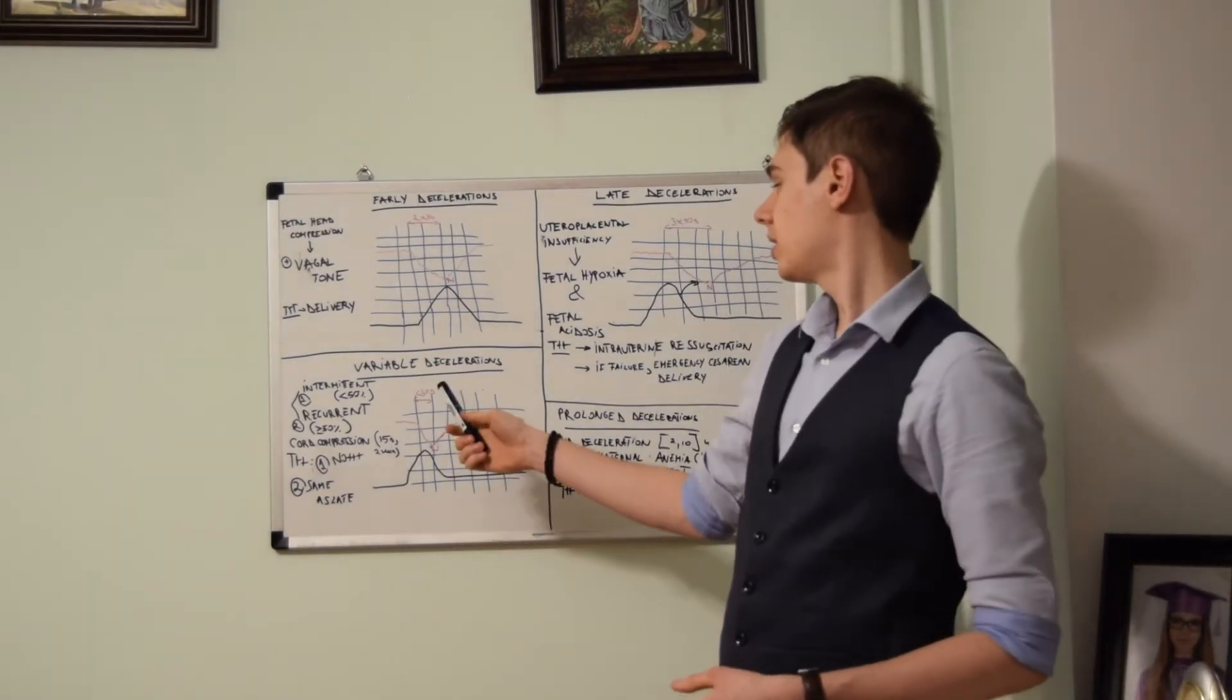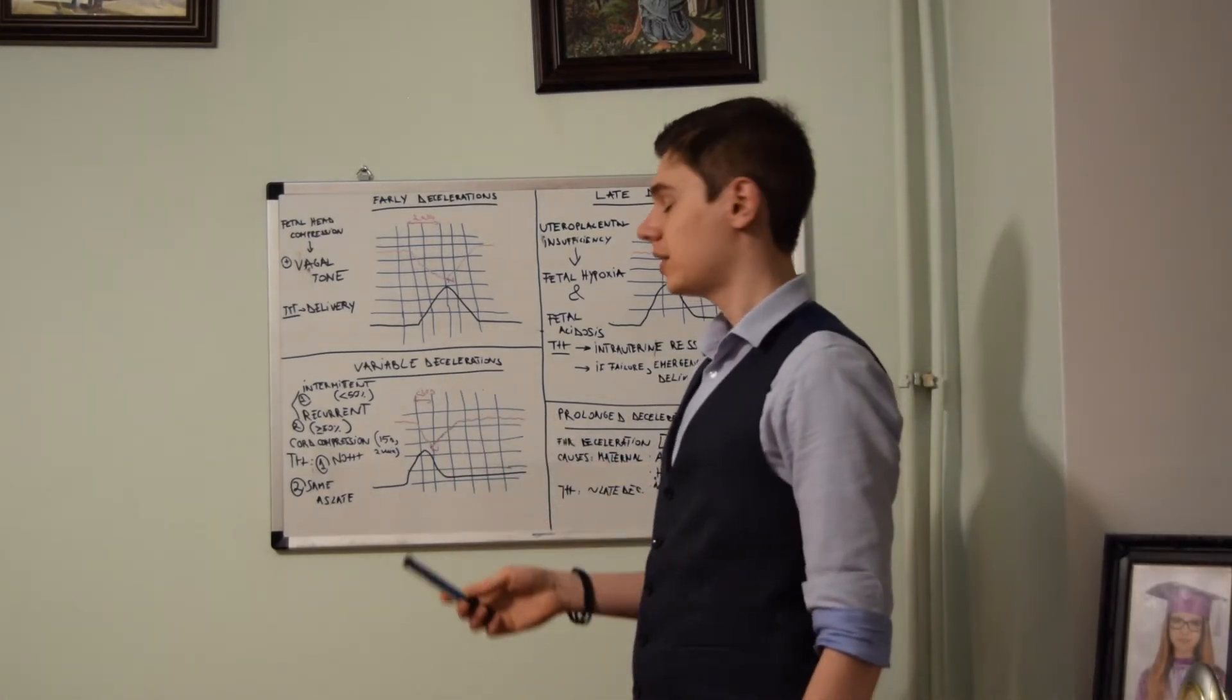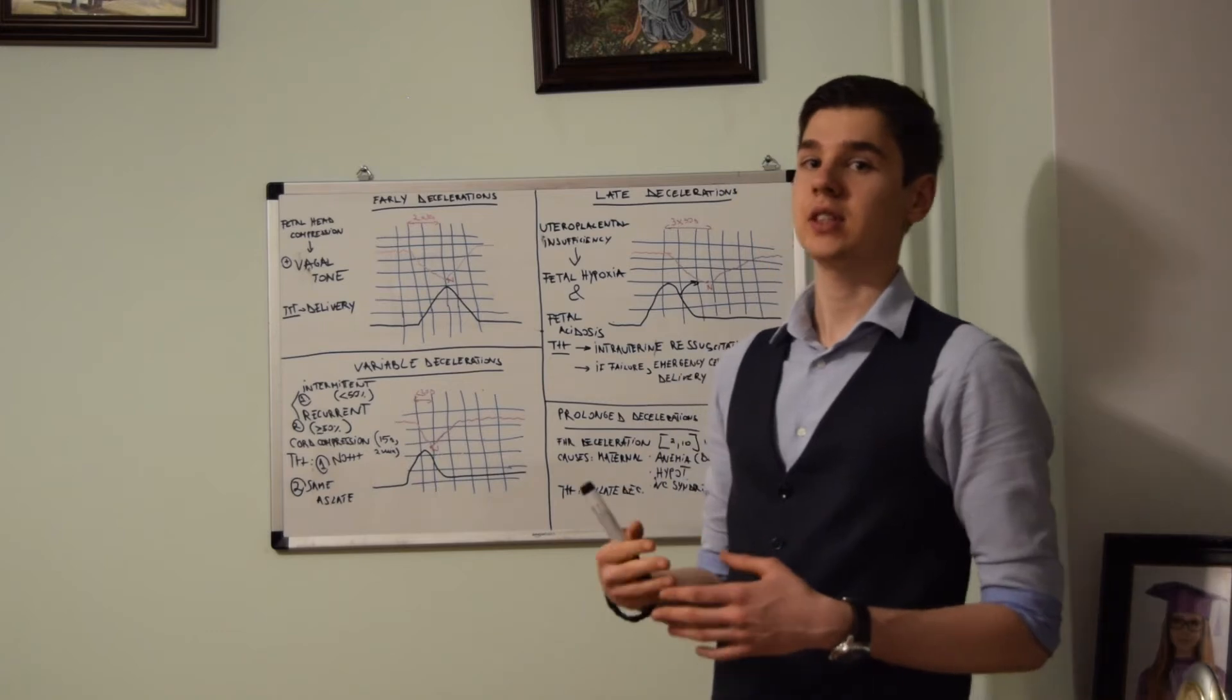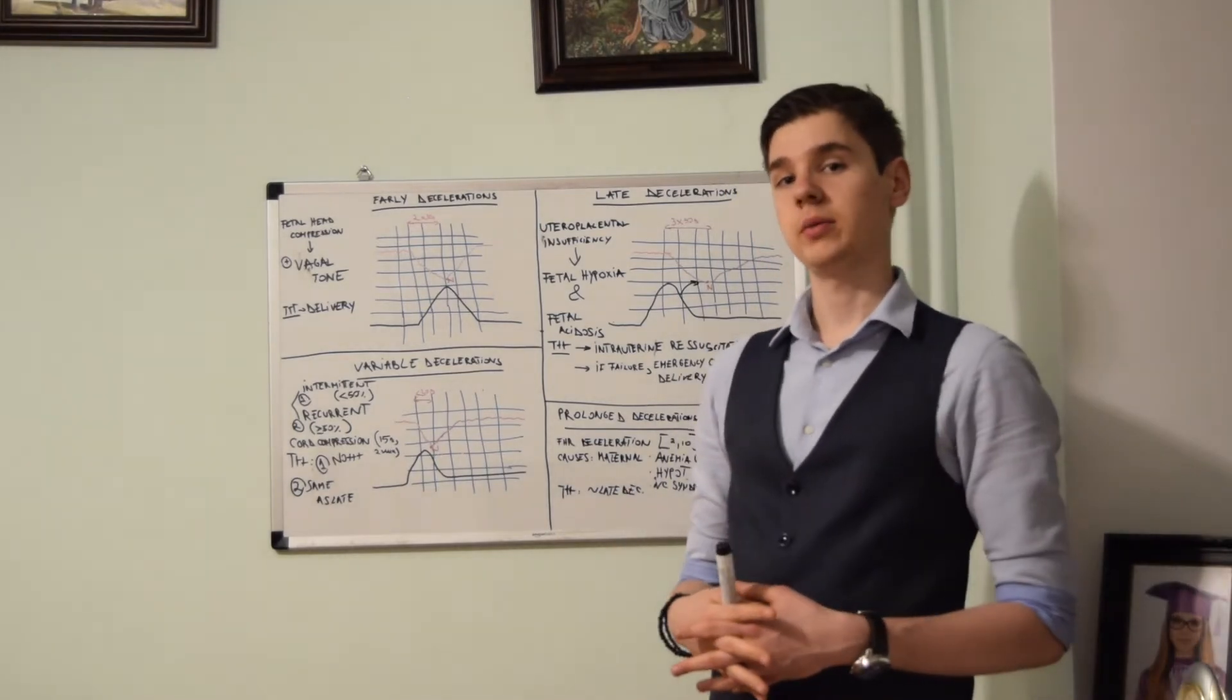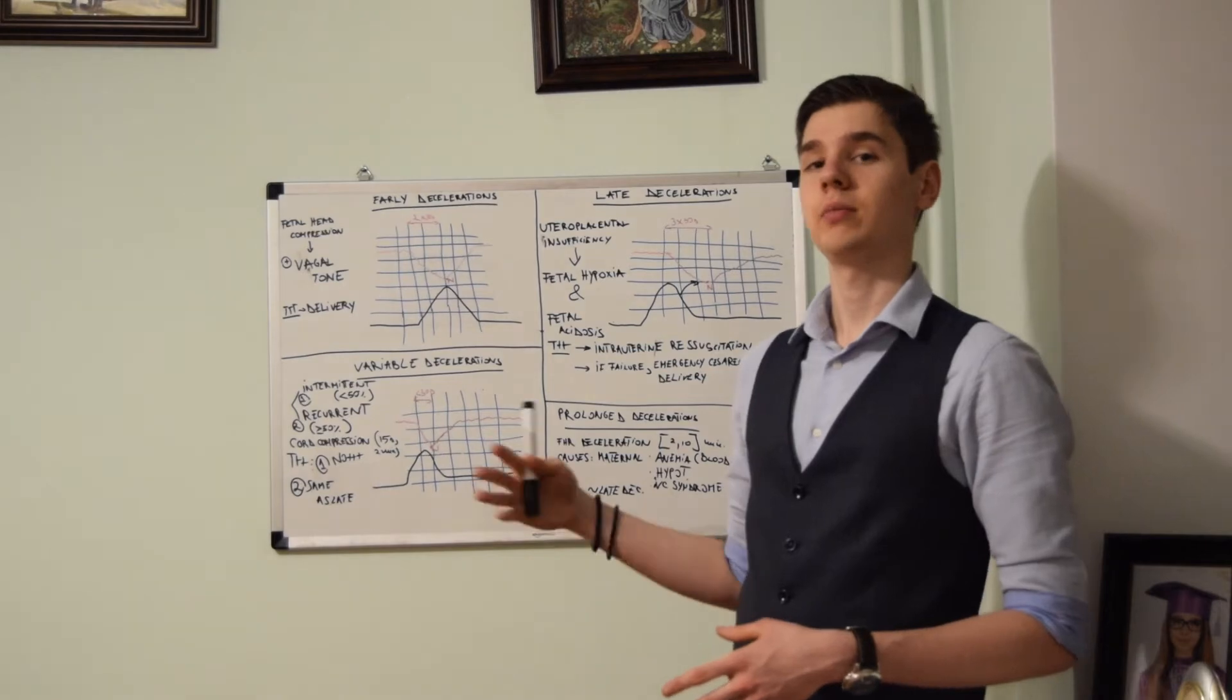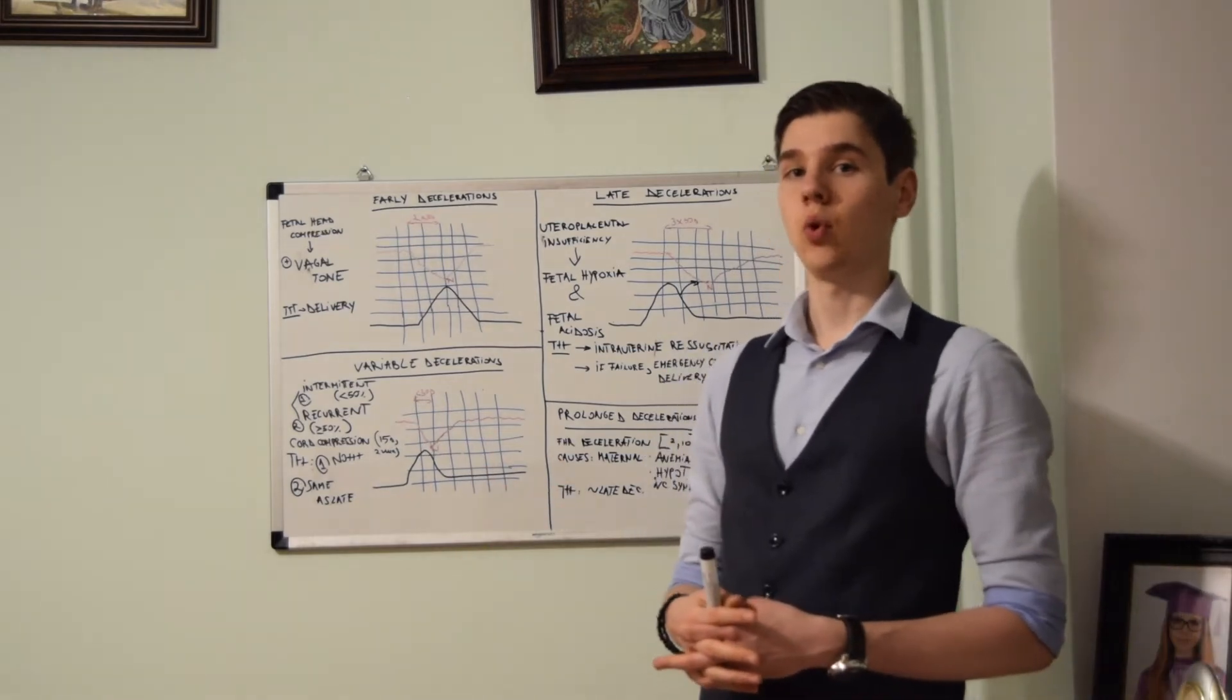In the case of variable decelerations, the nadir is achieved in less than 30 seconds. The cause of the variable decelerations is represented by the compression of the umbilical cord.